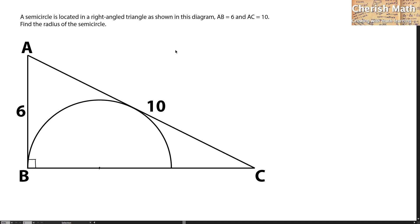Say hi from Cherish Math. This is the question. A semicircle is located in a right-angled triangle as shown in this diagram. AB equals 6 and AC equals 10. Find the radius of the semicircle.